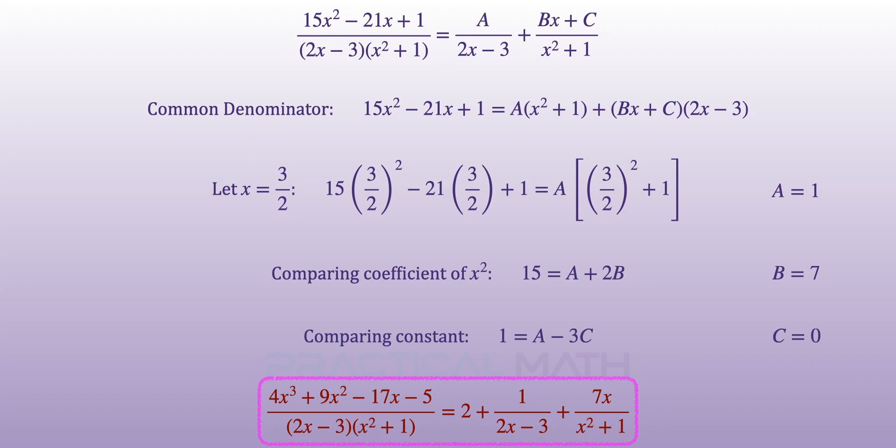Replacing A, B and C, we will get the answer of 2 plus 1 over 2x minus 3 plus 7x divided by x squared plus 1 for part 1 of this question.